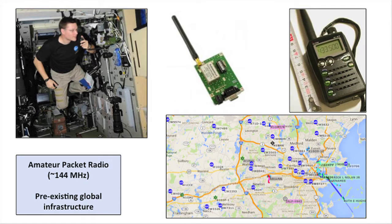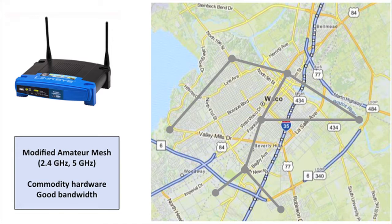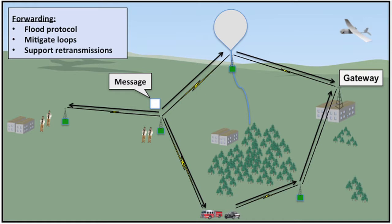One option we're looking at is amateur packet radio — an awesome, mature technology often used to talk to people around the world, to satellites in orbit, and even to the International Space Station. There's also a pre-existing infrastructure we can tap into in emergencies. Another solution is modified amateur Wi-Fi mesh, which provides much better bandwidth than packet radio. Once data reaches one of our nodes, it's synced across the network using a simple flooding protocol, with measures to handle loops and support retransmissions as nodes join or drop off.